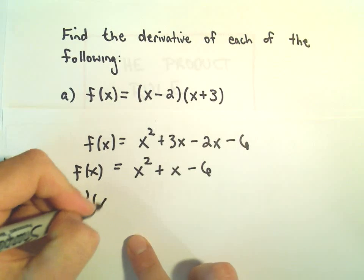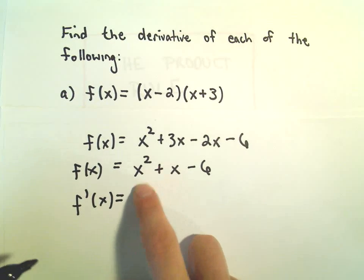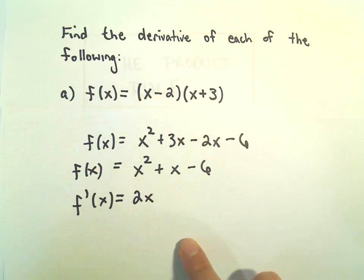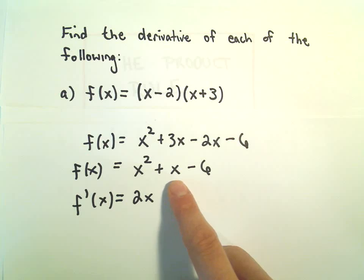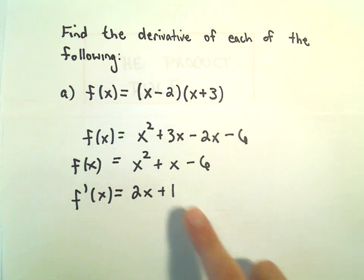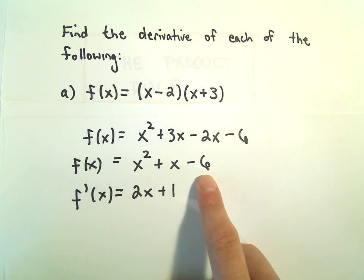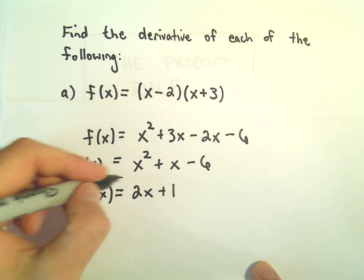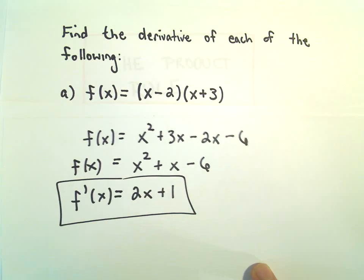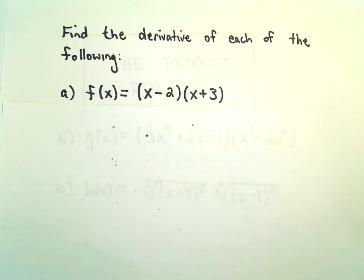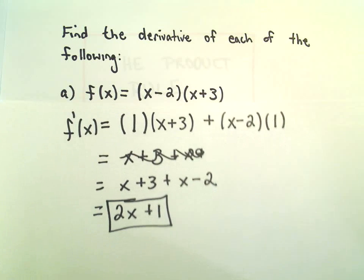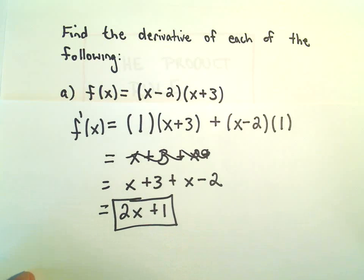Now, if we just use our actual power rule, well the derivative of x² is going to be 2x to the first, the derivative of positive 1x is just going to be positive 1, the derivative of negative 6 is just 0, so again, just illustrating, hey, you do get the same thing. But again, just in this video, just trying to illustrate the use of the product rule here a little bit.